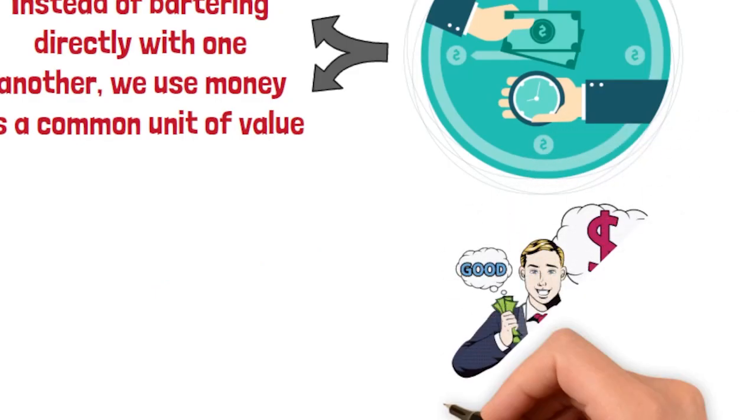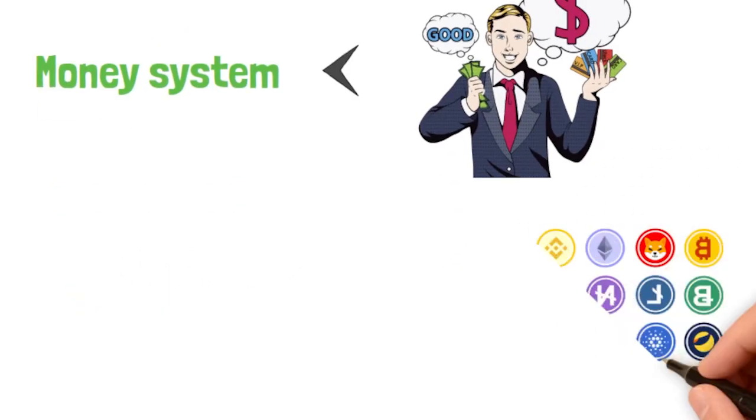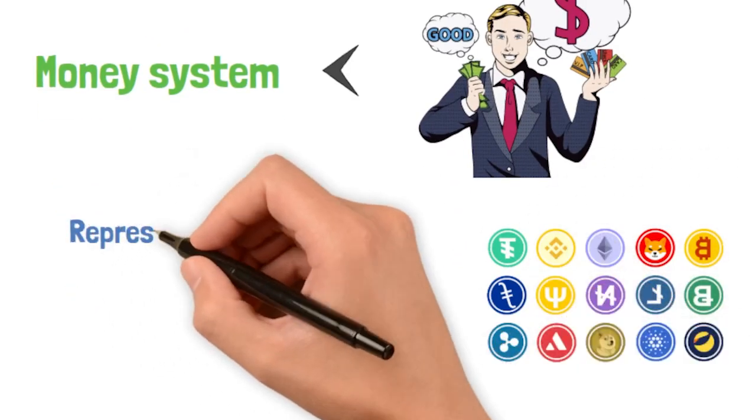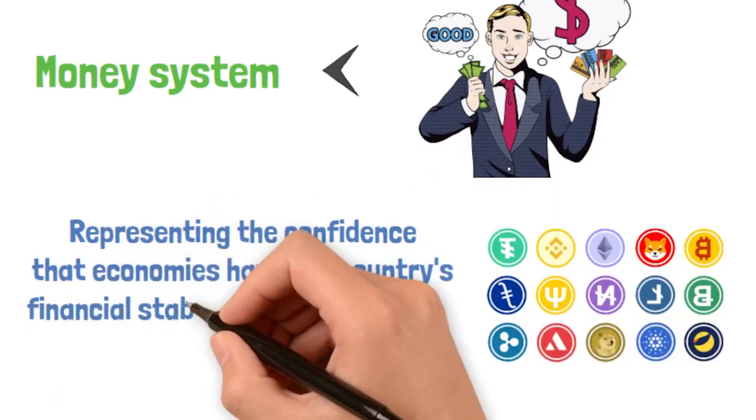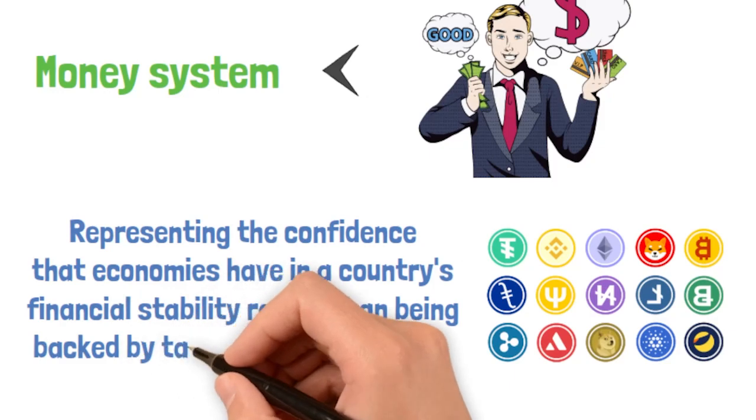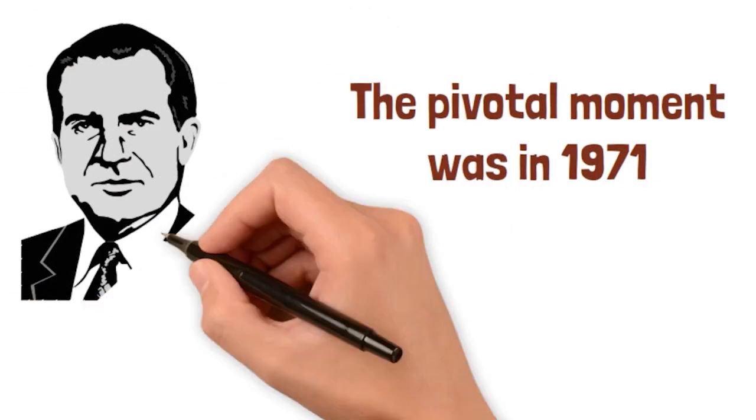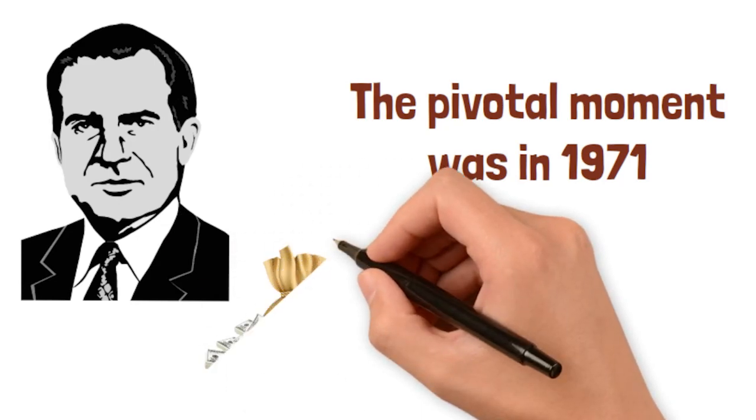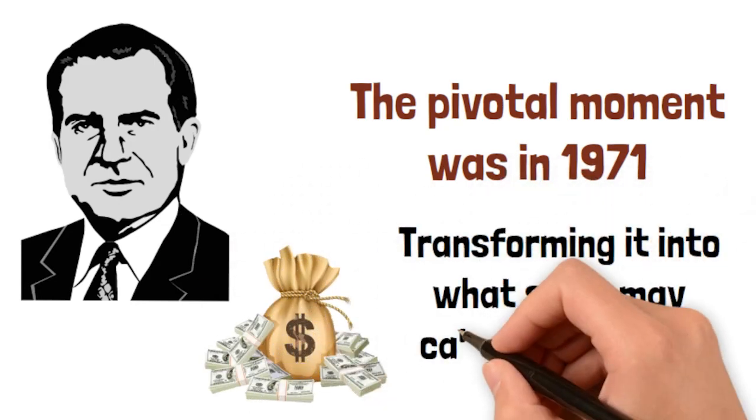To achieve wealth, it's essential to grasp the inner workings of today's currency and money system. Nowadays, money is considered a currency, representing the confidence that economies have in a country's financial stability, rather than being backed by tangible assets like gold. The pivotal moment was in 1971, when President Nixon disconnected the US dollar from the gold standard, transforming it into what some may call fake money.